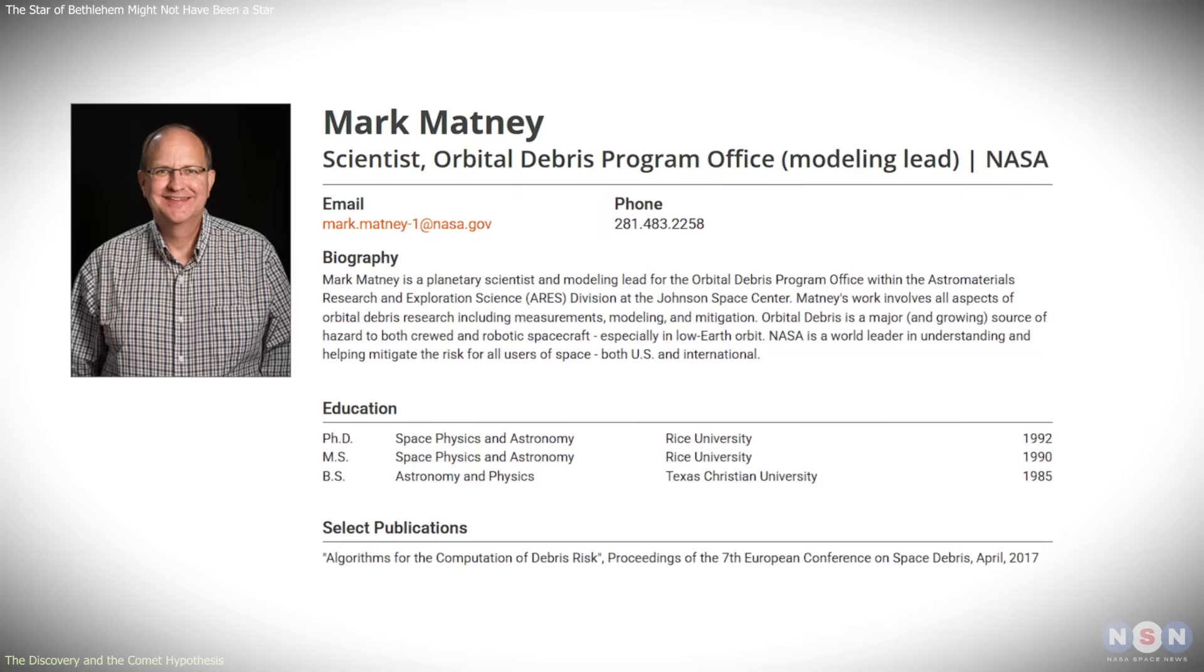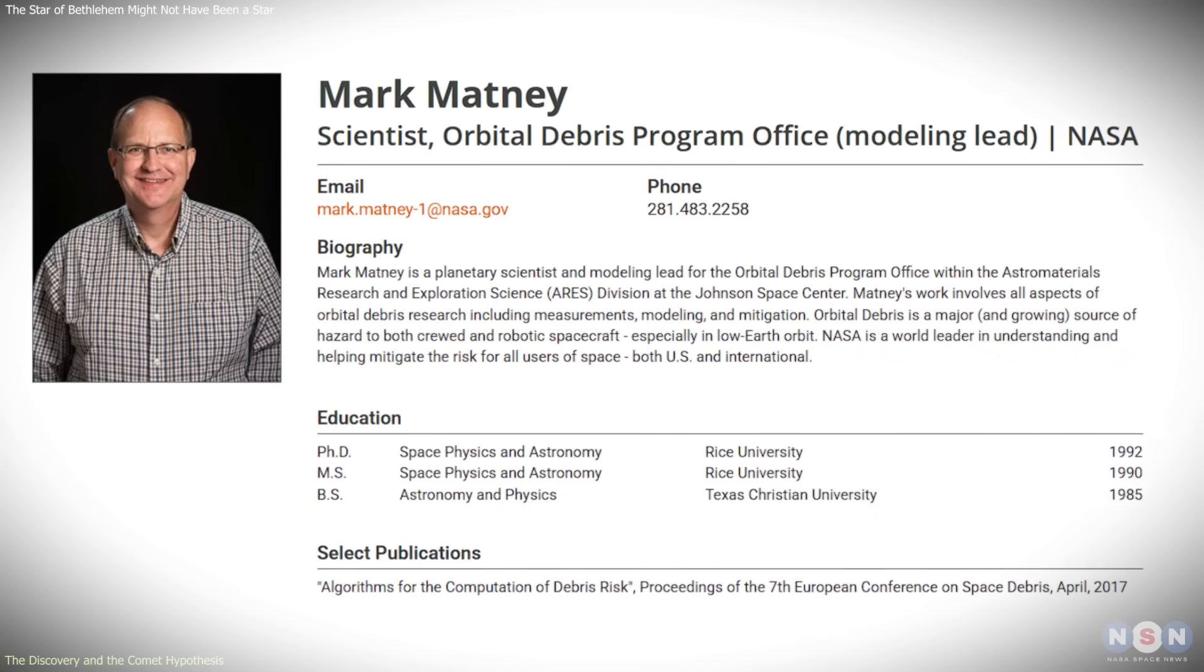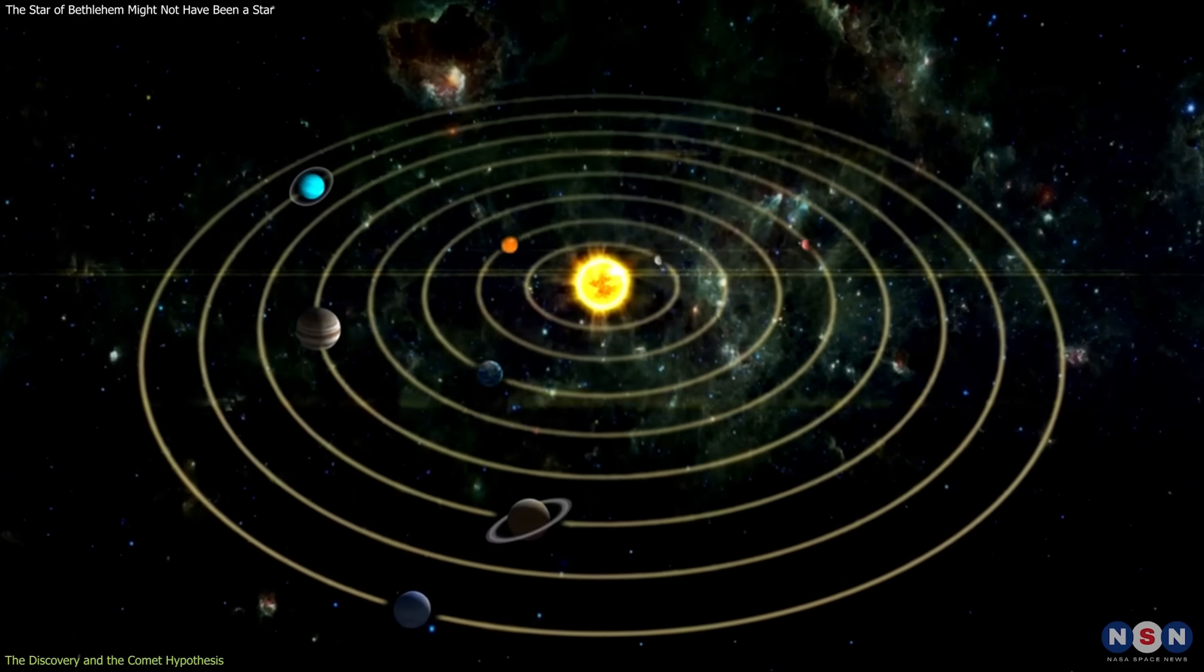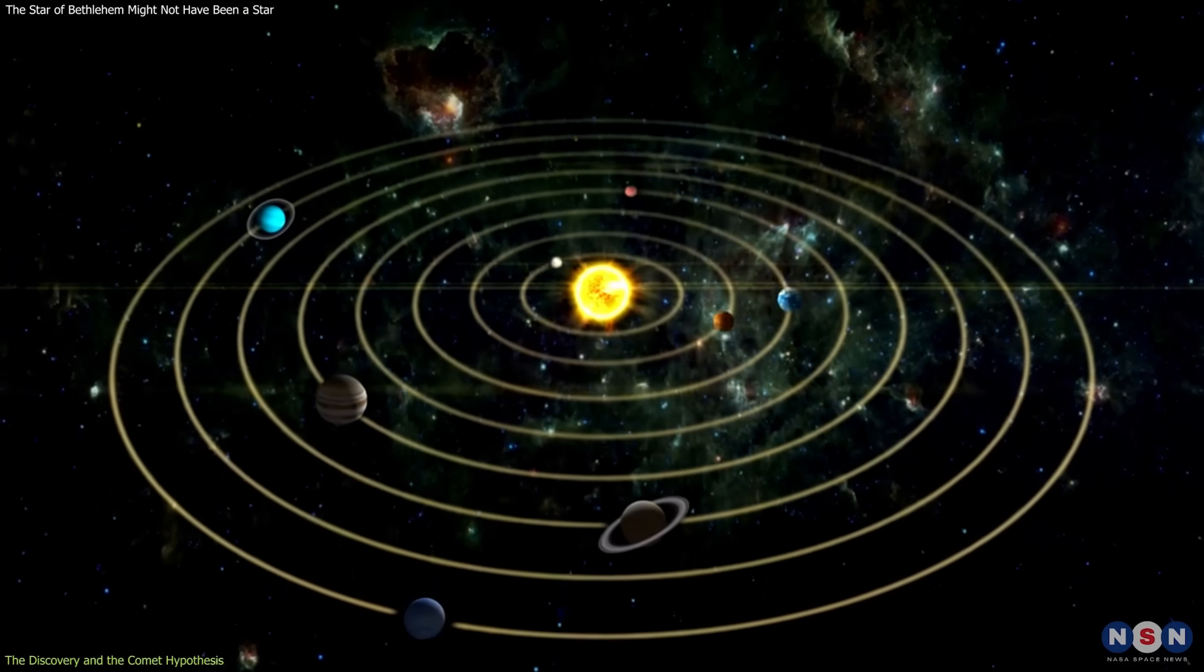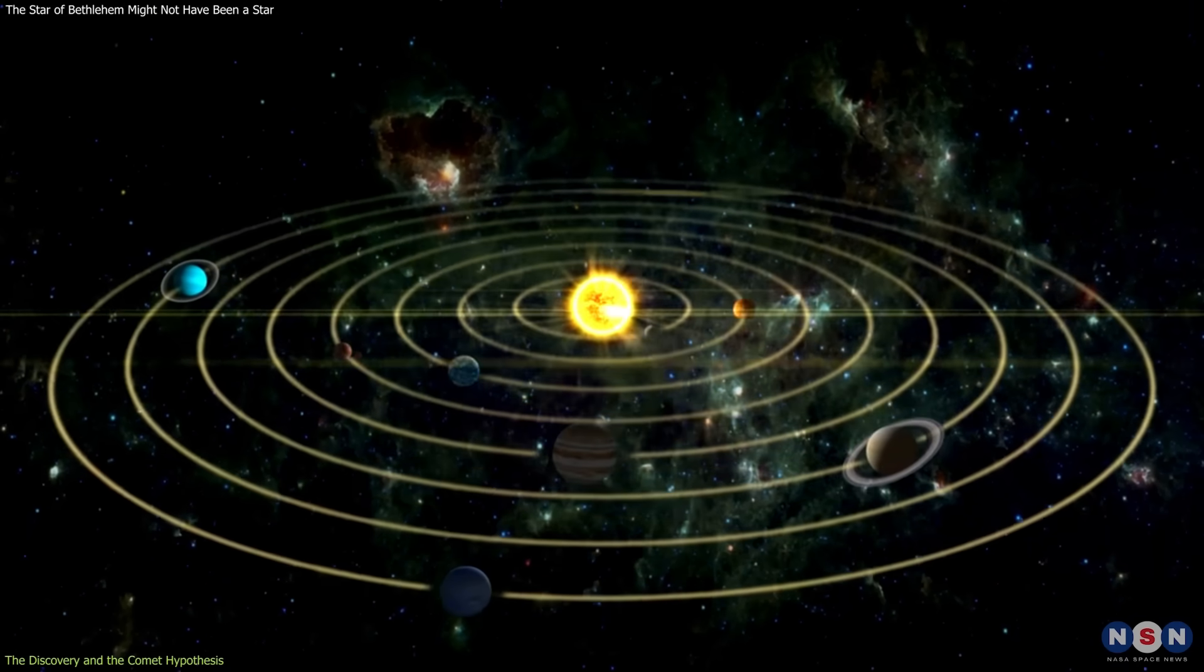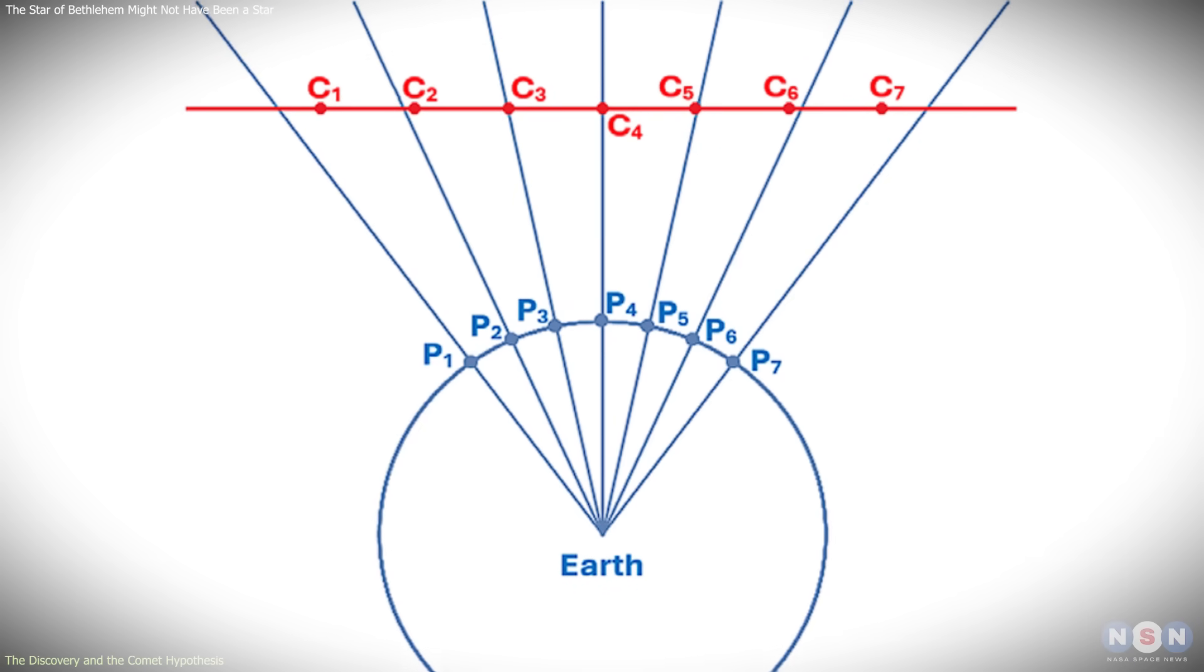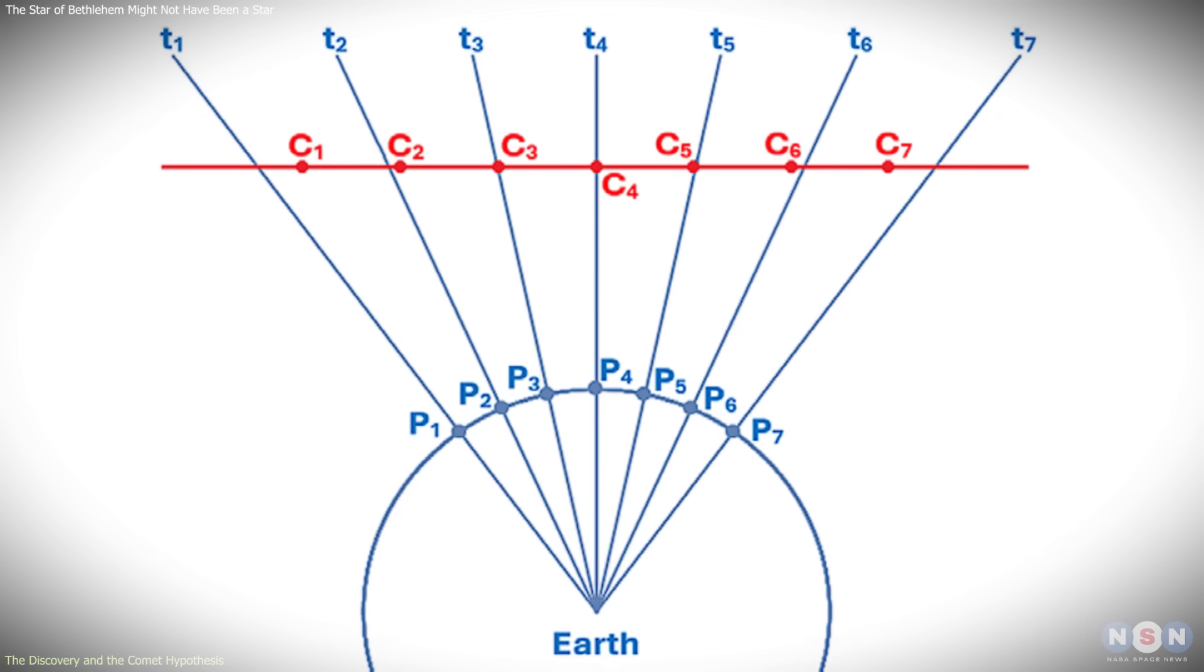Mark Matney, a planetary scientist working with NASA's Orbital Debris Program Office, approached the problem by asking whether orbital mechanics could create such an effect under extreme but realistic conditions. Because the Chinese records do not provide enough information to reconstruct a single definitive orbit, Matney modeled a wide range of possible trajectories consistent with the historical observations.